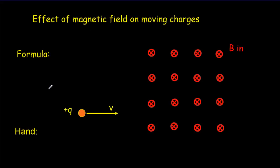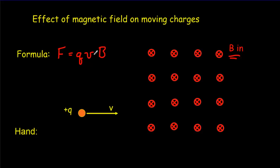The general situation: we've got a charge moving at a given velocity, going into a magnetic field that's perpendicular to that motion. The force is going to get bigger if you've got a bigger charge, bigger if you've got more speed, and bigger if you've got a bigger magnetic field. In SI units, the formula we would use to calculate the force on this charge is F = qvB.